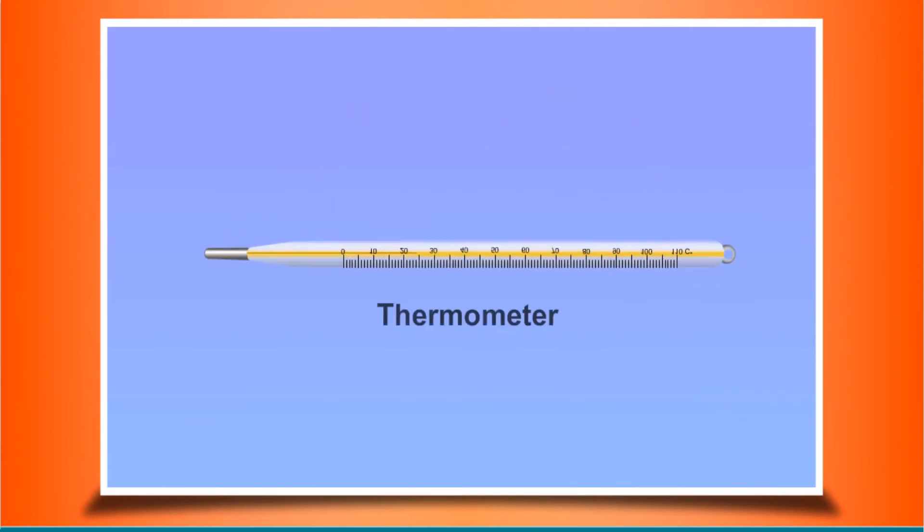A thermometer is a device which detects the change in temperature of an object. It works on the principle that liquids expand on heating. When a liquid is heated, its particles move faster and spread out over a large area. This is called expansion. When a liquid is cooled, its particles slow down and come closer. Hence, its volume decreases. This is called contraction.